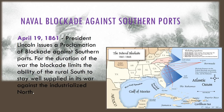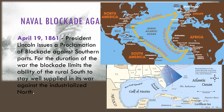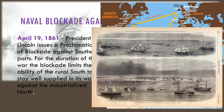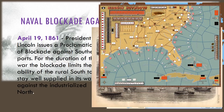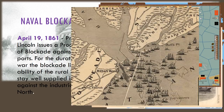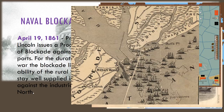On April 19, 1861, President Lincoln issues a proclamation of blockade against the Southern ports. The main way that the South got its resources was through imports that were shipped through its ports along the coast, and the main way that the South made money was by shipping its resources like tobacco and cotton through exports through its ports. So Lincoln's goal in blockading these ports with Union battleships is to stop the shipping. For the duration of the war, the blockade limits the ability of the rural South to stay well supplied in its war against the industrialized North.